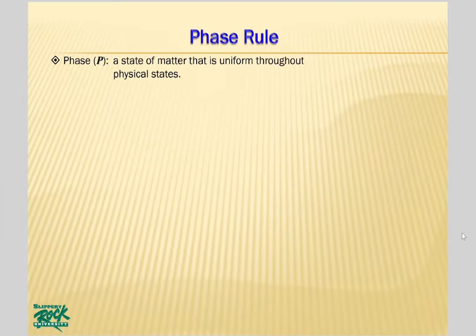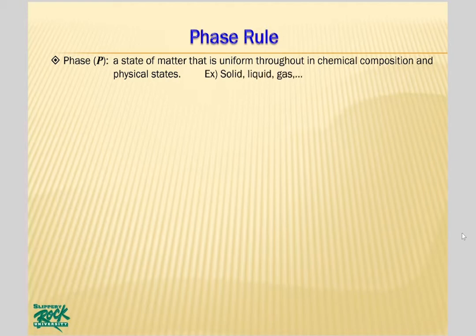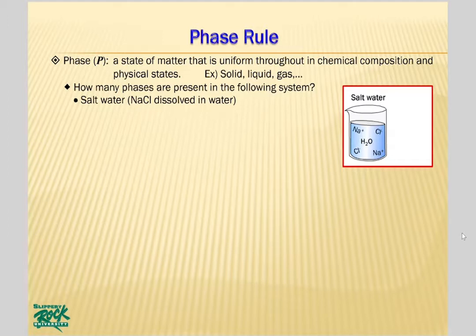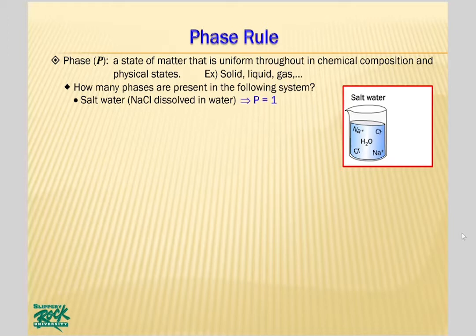What is a phase? A phase is a state of matter that is uniform throughout in chemical composition and physical states. Well-known examples of phases are solid, liquid, and gas. How many phases are present in salt water? Sodium chloride dissolves in water and makes a homogeneous mixture, which is also called a solution. The NaCl solution is uniform throughout in chemical composition and physical states. Consequently, the number of phases in NaCl solution is 1.